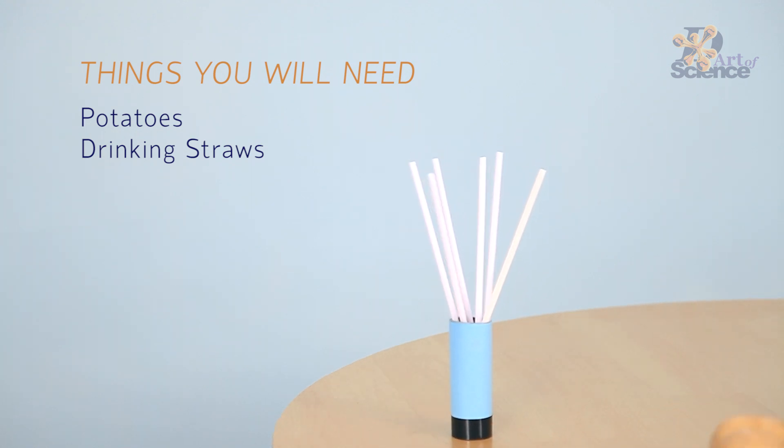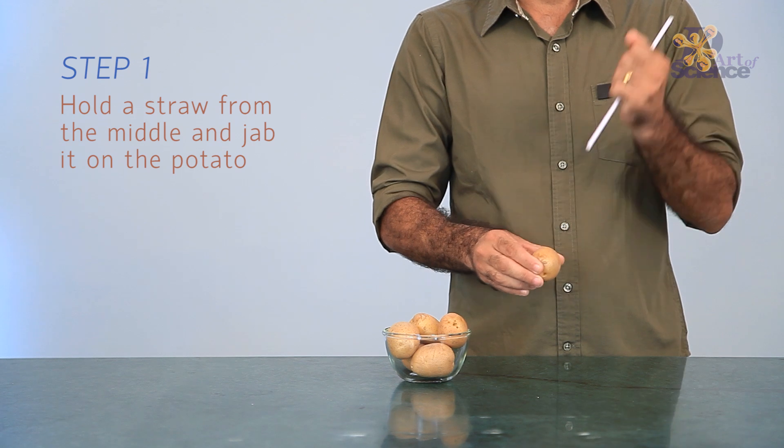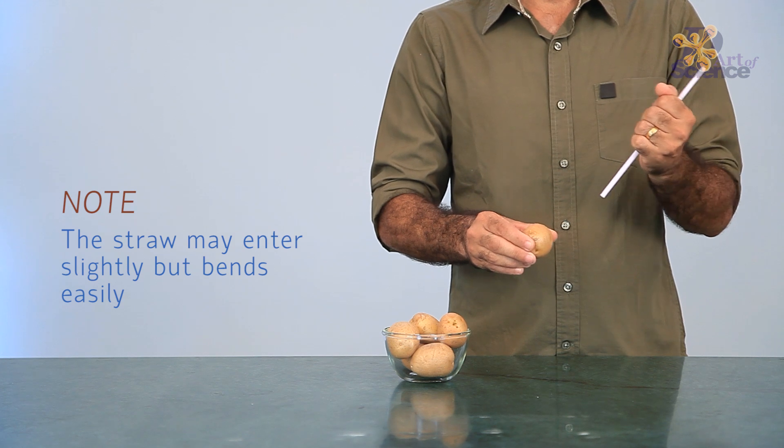Well, we are about to find that out. When the straw tries to go through the potato initially, the air leaves the straw from the other end, making the straw weak since it's only made of plastic.